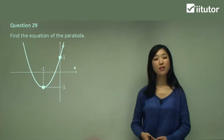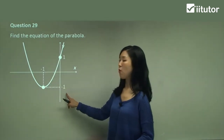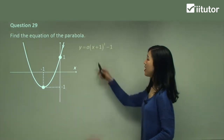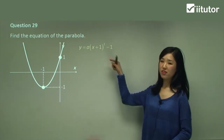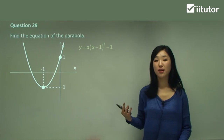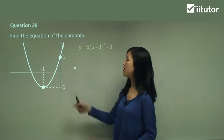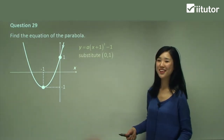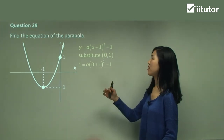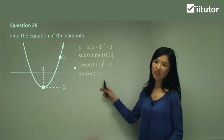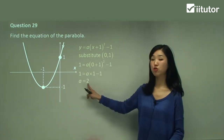Question 29: find the equation of the parabola. Again, they give us the graph — identify how it shifts. It shifted to the left by one unit, and it shifted down by one unit as well. So the equation will be a times x plus 1 squared minus 1, because when we shift to the left we add 1, and if it shifted down 1, we subtract 1. Leave the coefficient as a. They give us the y-intercept point (0, 1), so substitute it in. y is 1 and x is 0: 1 equals a times 0 plus 1 squared minus 1. That simplifies to 1 equals a times 1 minus 1, so moving the negative 1 over gives 2 equals a. The coefficient a is 2.